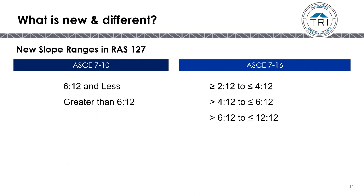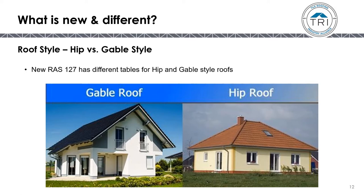The slope ranges have also changed in RAS-127. The previous version had two slope ranges: 6-in-12 and less, and greater than 6-in-12. The new RAS-127, updated to the ASCE-716 standard, now has three roof slope ranges: 2-in-12 to 4-in-12, greater than 4-in-12 to 6-in-12, and greater than 6-in-12 to 12-in-12. It is also now important to distinguish between hip roofs and gable roofs, as they have different values in the new standard.